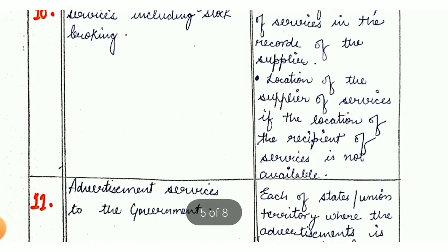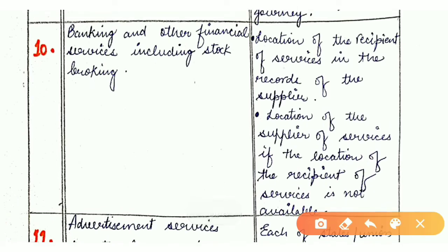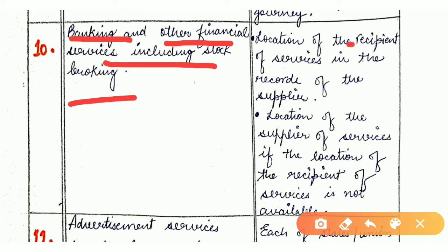The 10th case covers banking and other financial services including stock broking. In this case, the place of supply is the location of the recipient of services as per the records of the supplier. If the recipient's location is not available in the records, then the location of the supplier of service becomes the place of supply.